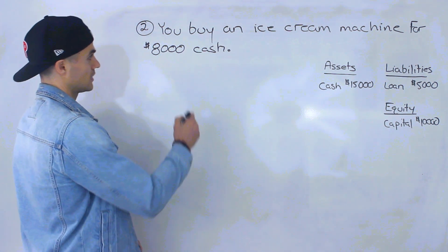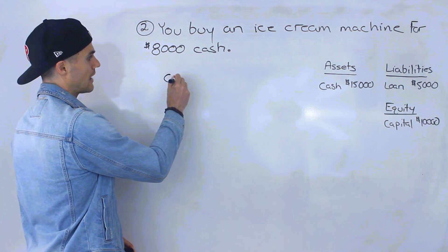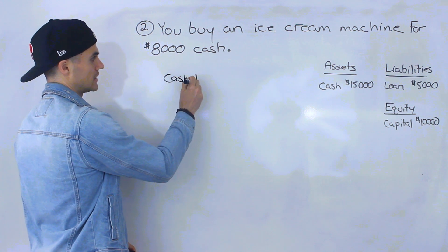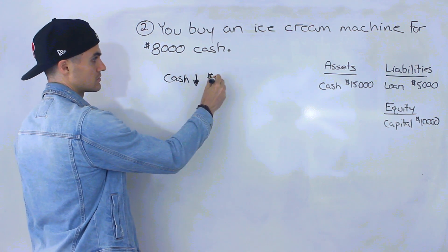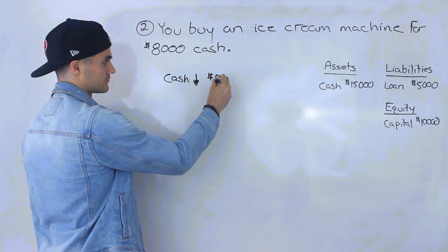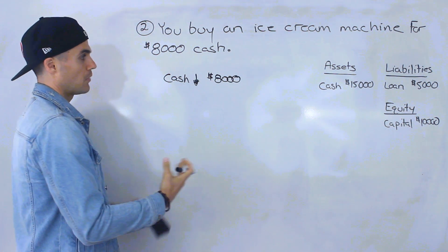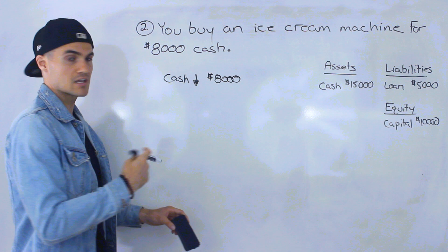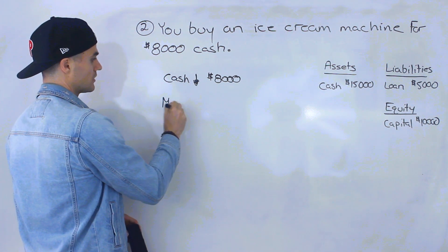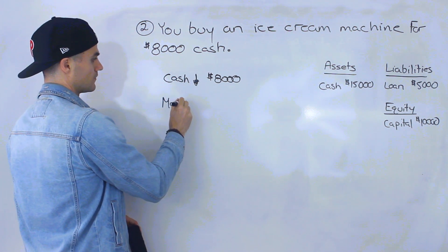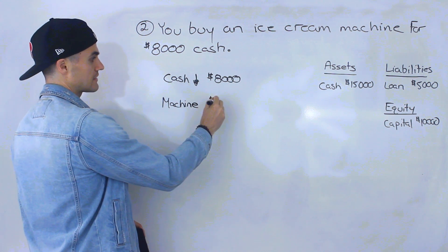What's going to happen in this transaction? Your cash is going to go down by eight thousand dollars — you're spending eight thousand dollars. But what are you going to receive? You're going to receive an ice cream machine, let's just call it a machine, and that's going to be worth eight thousand dollars.